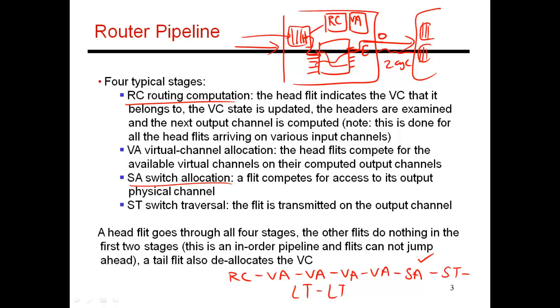So as I said, there are four different stages. You have to first figure out where you're going. Once you've figured out where you're going, you need to allocate a virtual channel on that link. Once you've done that, you then need to allocate the physical link. Once you've been given all these resources, that's when you actually read yourself out of the input buffer, go through the crossbar, place yourself on the output link. This could take a few cycles to actually get across to the other side, and then you repeat this process again. So this is a four-stage pipeline.